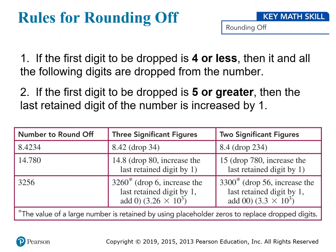Before we continue, let's review the rules for rounding numbers. Before you can round a number, you first need to figure out how many digits you want to keep. Later on, we'll see how to do that, but for now we can assume we know how many digits to keep just so that we can practice.